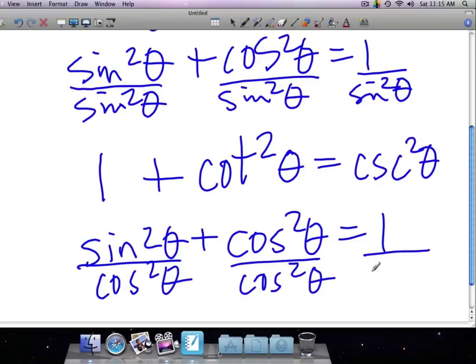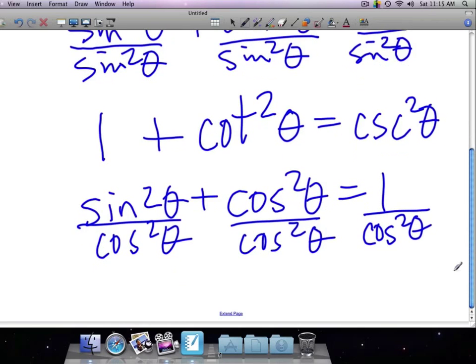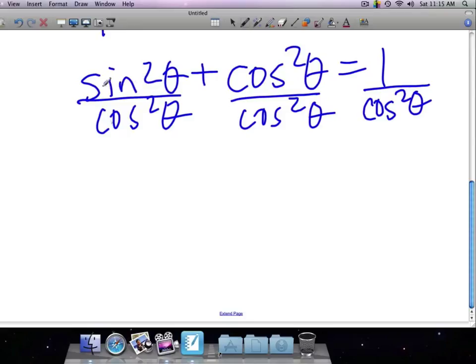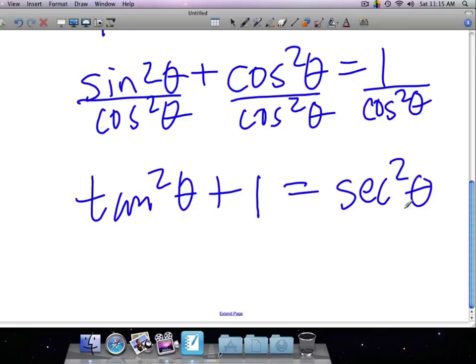since I'm working just some algebra 1 and equation manipulation and I'm doing it correctly, this is equal to, hopefully you said tangent squared. This is 1 and this is secant squared. Okay? So you'll need to know these and you'll need to know them cold. You need to know them so well that they come to mind when you see things.